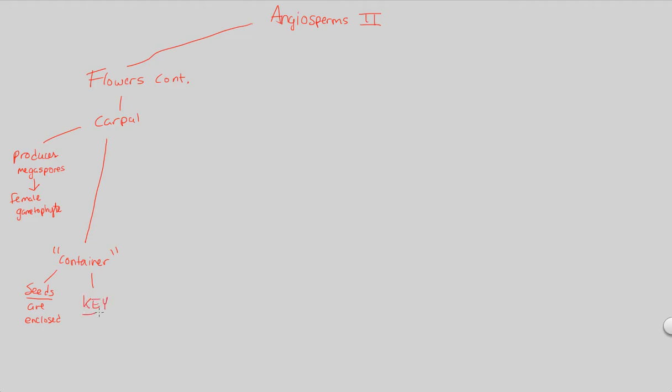This is going to be considered the key, the absolute key structure that distinguishes two things that we've studied thus far in this lecture. That distinguishes both the gymnosperms from what we're studying right now versus the angiosperms. The reason why it's distinguished is because gymnosperms, they don't have this.